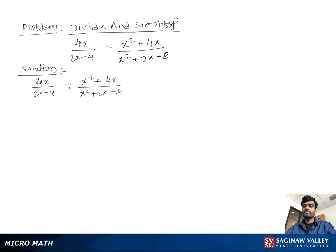Now, second step, we keep the first fraction as it is. So you can write 4x over 2x minus 4.